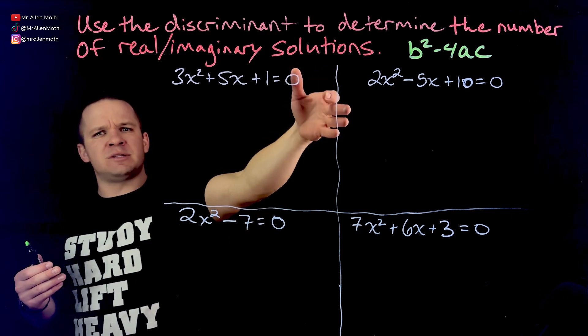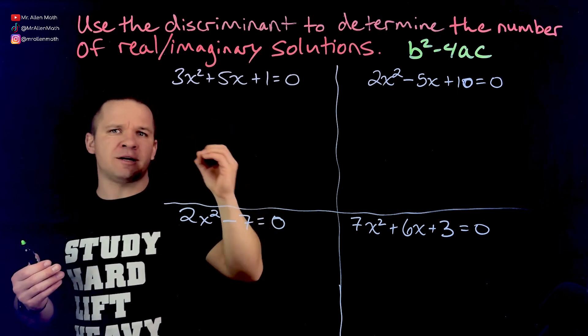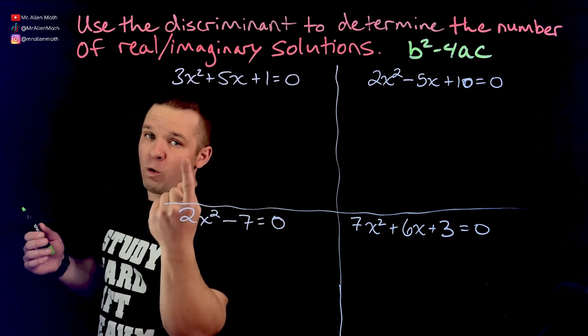And then what if that discriminant was zero? Well, what's the square root of zero? That's zero. So if I'm adding zero and I'm subtracting zero, am I going to get two unique solutions? No, I'd only get one.